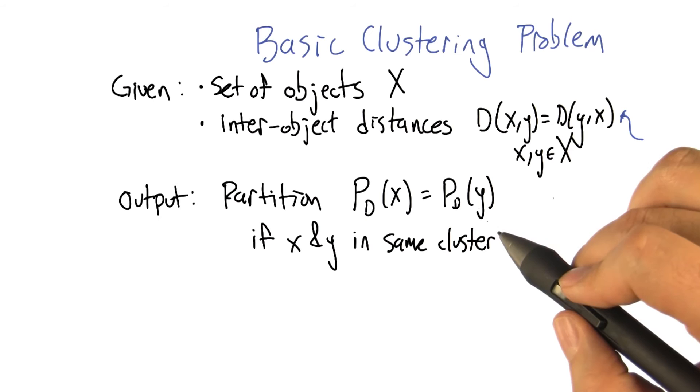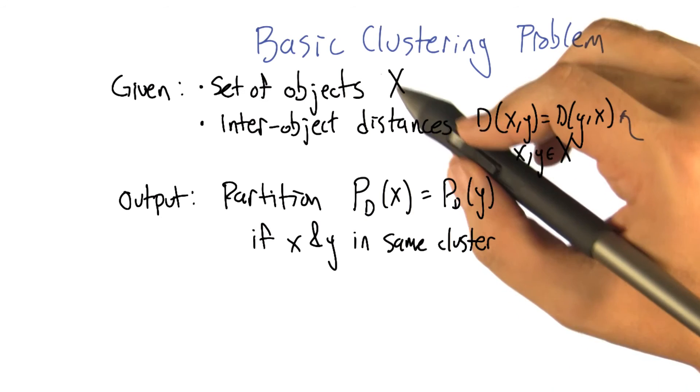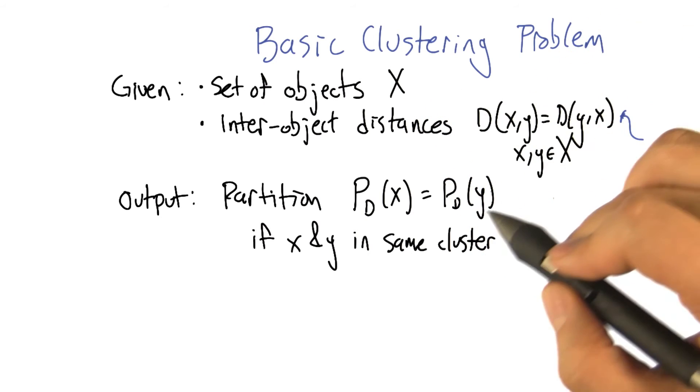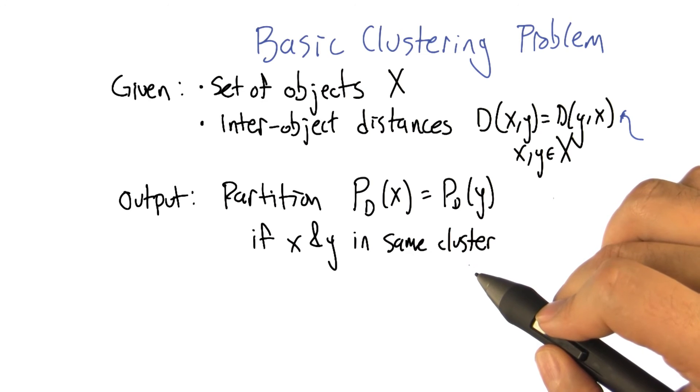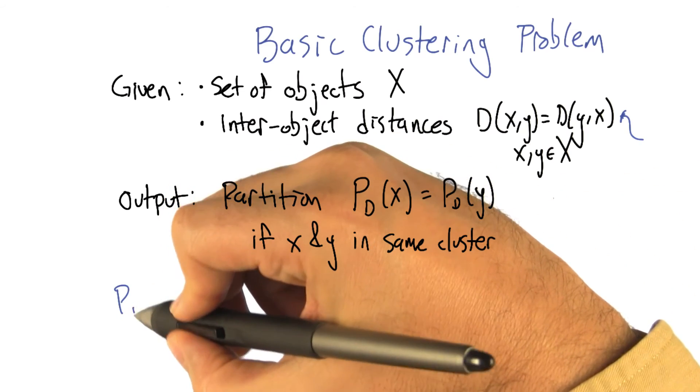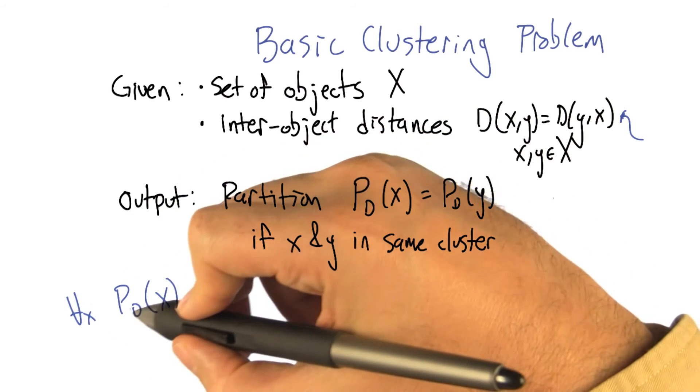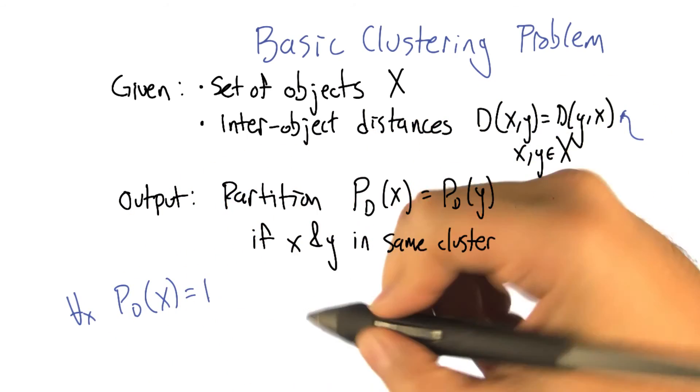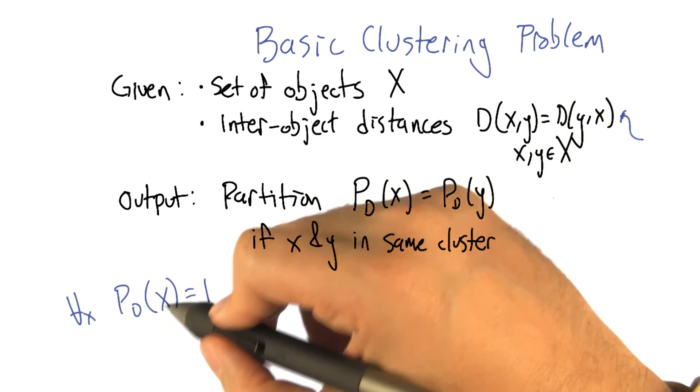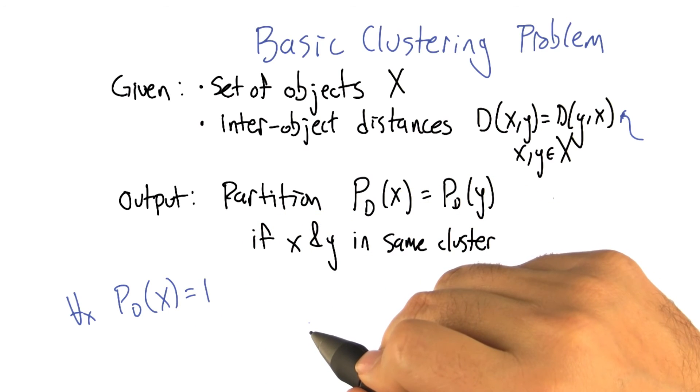What would be a trivial clustering algorithm based on this definition? It's taking as input the objects and the distances, and then it spits out partitions. A trivial one would be put everything in the same partition. Yeah, so that would look like this: P, for all X in the set of objects, P D of X equals, let's say, one. So that means that all objects are in partition one. We're all humans.